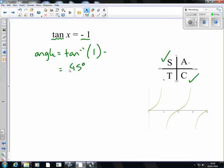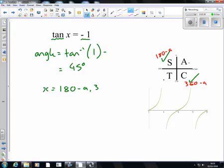And then I'm going back to my CAST diagram and I'm saying, right, well, in that second quadrant, I know it's 180 take away A. In the fourth quadrant, it's 360 take away A. So my solutions are X equals 180 subtract A, and 360 subtract A. So 180 take away 45 is 135 degrees, and 360 take away 45 is 315 degrees. So they are both my solution in tan.